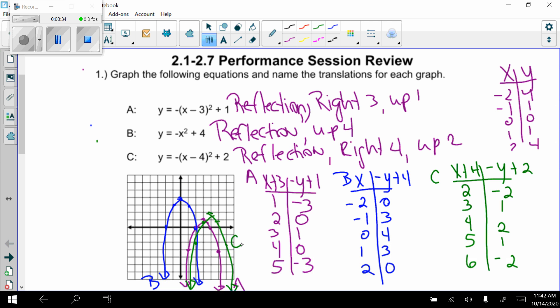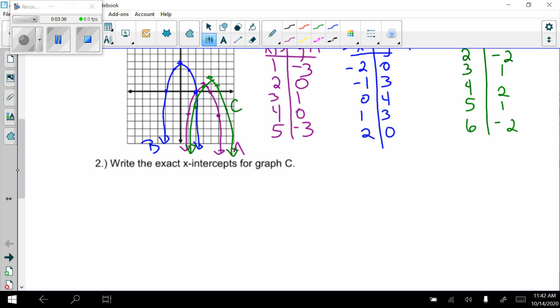Okay, so that is part A. Number 2, write the exact x-intercepts for graph C. So graph C says y equals negative x minus 4 quantity squared plus 2. Exact x-intercepts mean absolutely no decimal. So I need to solve this. I can either do completing the square, or I could do quadratic formula, or I could just set it equal to 0 as it is.